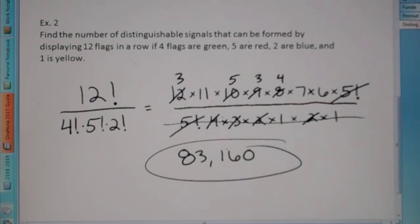And that is how we do distinguishable permutations. Okay? Good luck with that.